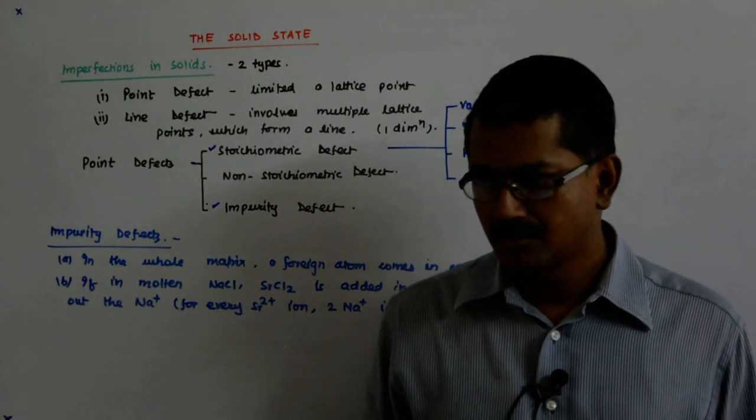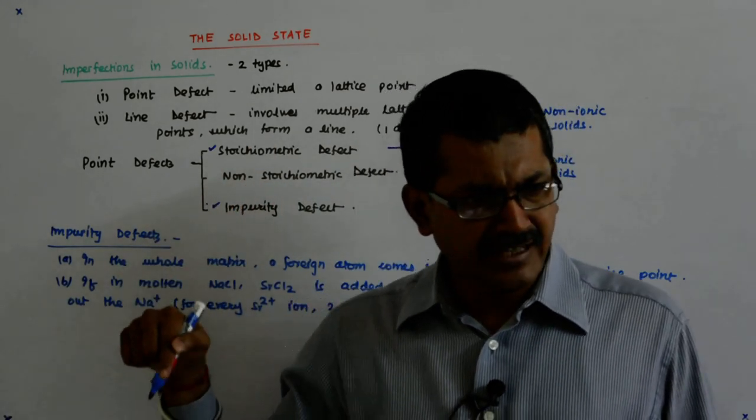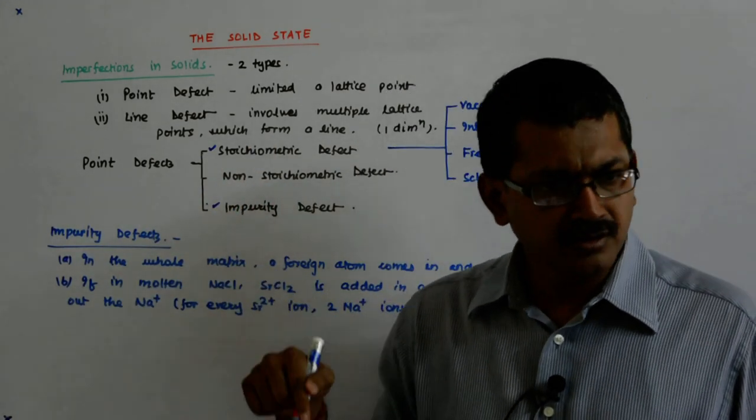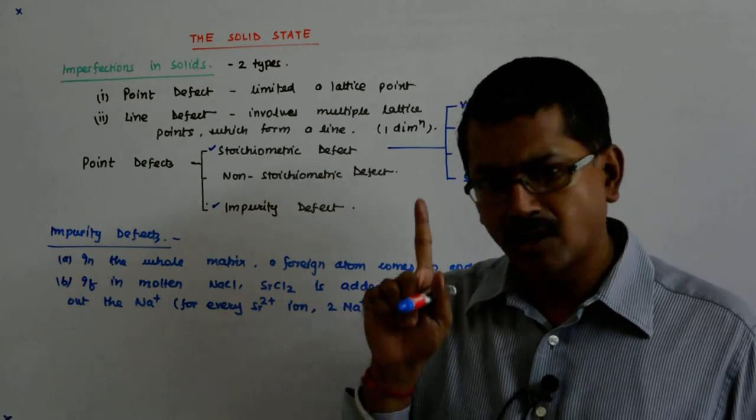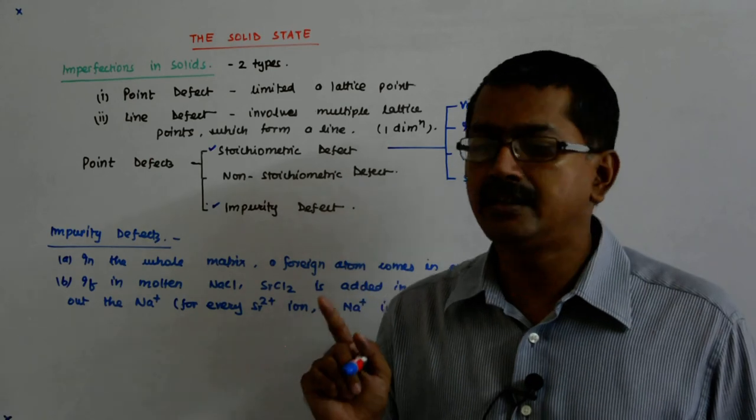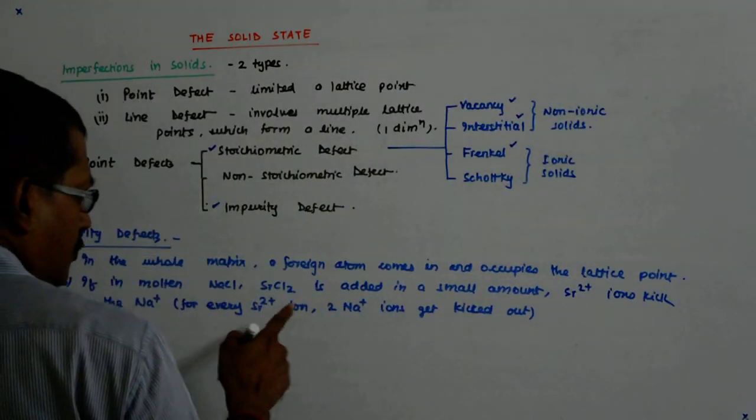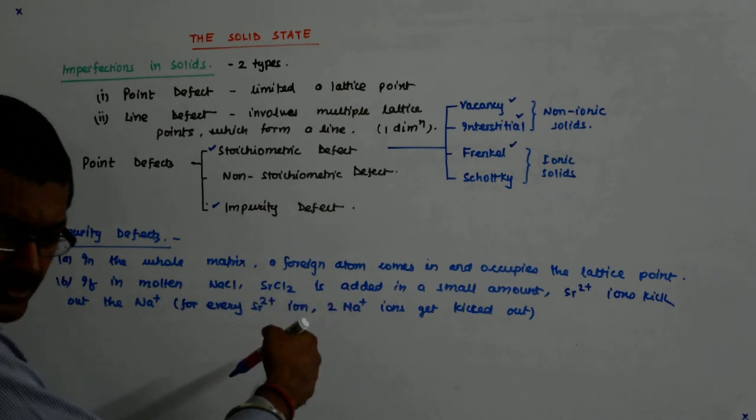Strontium comes in, kicks out two Na. So, at one of the places of Na, strontium is present and one remains vacant. So, as many vacancies get created, and why two of them should go, you understand due to that electrical neutrality.